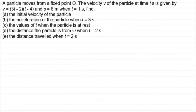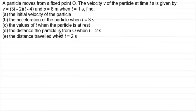What I've got here is a great question to try because it brings out lots of features, and especially this last part, Part E — the distance travelled by a particle is quite challenging. So I definitely recommend that you have a go at this question. A particle moves from a fixed point O. The velocity v of the particle at time t seconds is given by v equals 3t minus 2 times t minus 4.